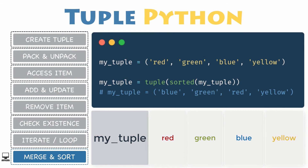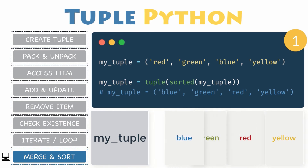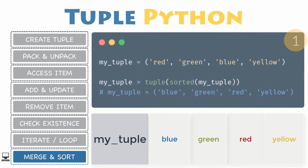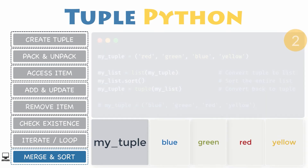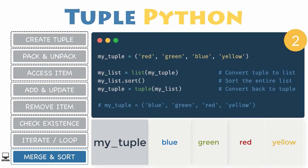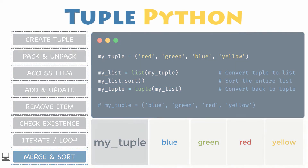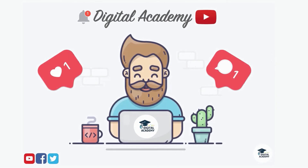Method one: use the built-in sorted method that accepts any sequence object as a parameter. Method two: convert a tuple to a mutable object like a list, gain access to a sorting method, call it, and then convert it back to a tuple. Either way, you will get the same sorted tuple: blue, green, red, and yellow.